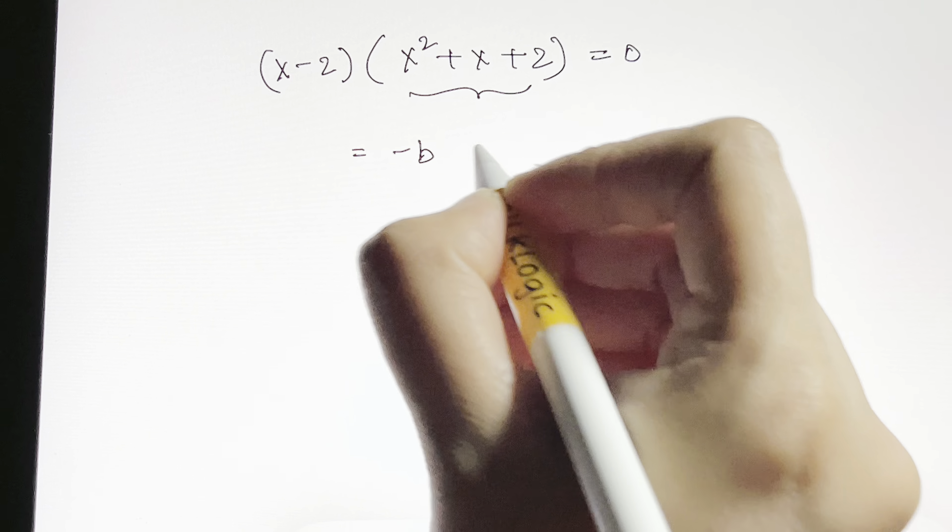That gives negative 1 plus or minus the square root of negative 7, over 2. Which equals negative 1 plus or minus the square root of 7 times i, over 2. So how many values of x do we have? We have x equals 2 from before, and x equals (negative 1 plus or minus √7 i) over 2. That gives us a total of 3 solutions for this cubic equation. Thank you so much for watching, bye bye, take care!